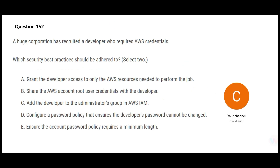Now let's jump into the next question. Here we need to select two answers. A new person has joined your company and you need to give them access to AWS. Option A says grant that person access to only the resources they need to perform their job — which is correct. Why would you give admin access when they just need to fire a SQL query? They just want read access.